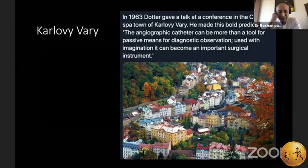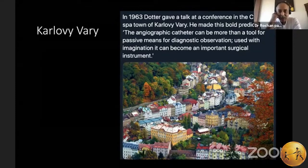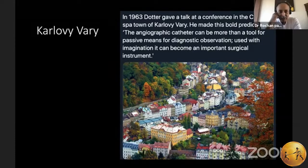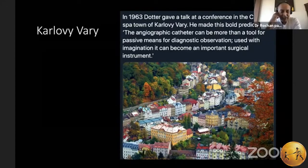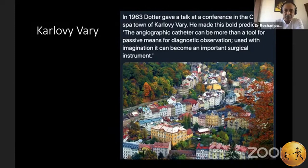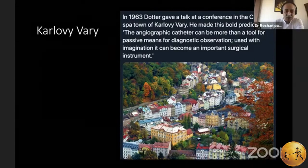Karlovi Vari has a famous national movie festival for which Arsa Satya got the Best Actor Award for Om Puri. And Karlovi Vari was the place where in 1963, Dr. Charles Dotter first visualized the power of the angiographic catheter and image-guided intervention, and forecast what is now an everyday, well-established technique and specialty. He was one of the first visionaries who pointed out the ability of the angiographic catheter to provide pinhole surgery and accurate treatment for multiple pathologies — what we now know as interventional radiology.